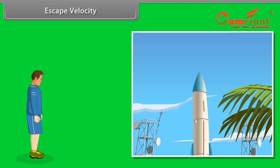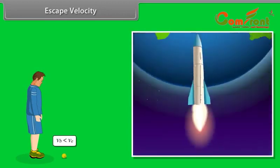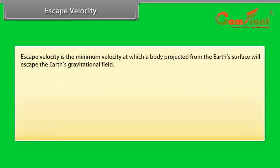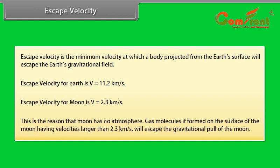Escape velocity. Can we throw an object with such high initial speed that it does not fall back to the earth? Yes. If we throw an object with escape velocity, it does not fall back to the earth. Escape velocity is the minimum velocity at which a body projected from the earth's surface will escape the earth's gravitational field. Escape velocity for the earth is V is equal to 11.2 km per second. Escape velocity for moon is V is equal to 2.3 km per second. This is the reason that moon has no atmosphere. Gas molecules, if formed on the surface of moon having velocities larger than 2.3 km per second, will escape the gravitational pull of the moon.